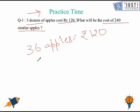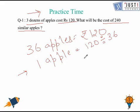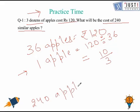To find the answer, we need to find out the cost of one apple. Step 1 says the cost of one apple would be 120 divided by 36, which is 10 over 3. So cost of 240 apples would be 240 times 10 over 3. This gives us an answer of rupees 800.